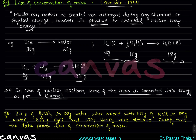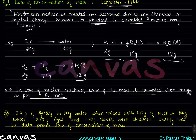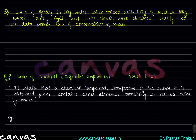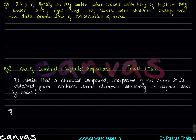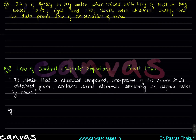Note this down. Next question: 3.4 gram of AgNO3 in 100 gram water when mixed with 1.17 gram of NaCl in 100 gram water, 2.87 gram AgCl and 1.70 gram NaNO3 were obtained. Justify that the data proves the law of conservation of mass.